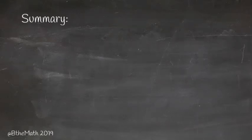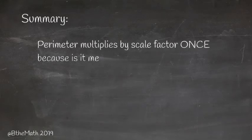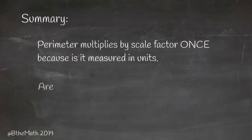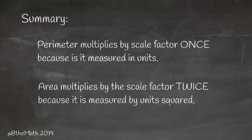So in summary, a quick way to remember when you have dimension changes: perimeter multiplies by the scale factor once, because it's measured in units. Area multiplies by the scale factor twice, because it's measured by units squared.